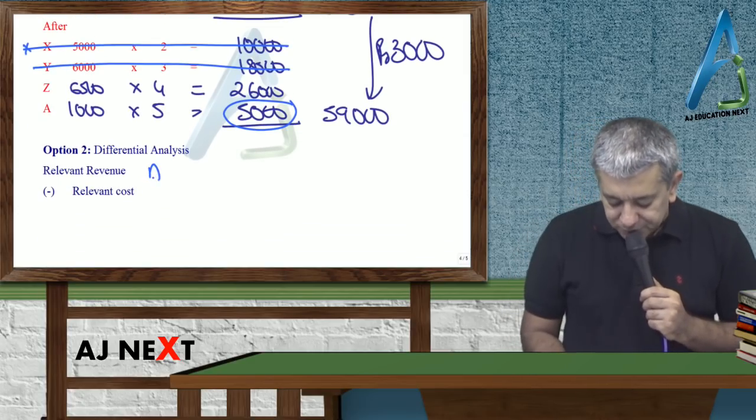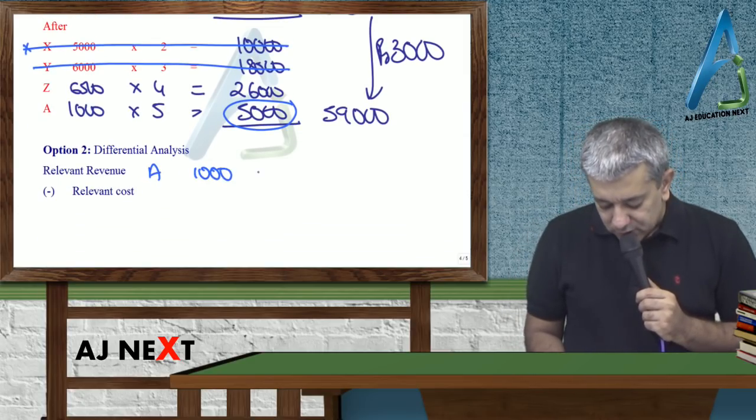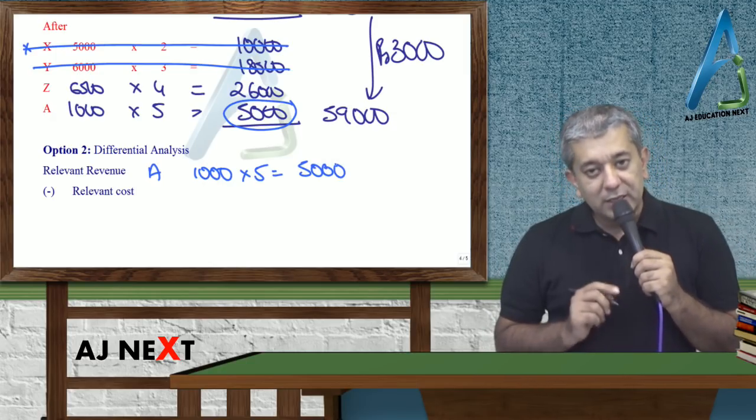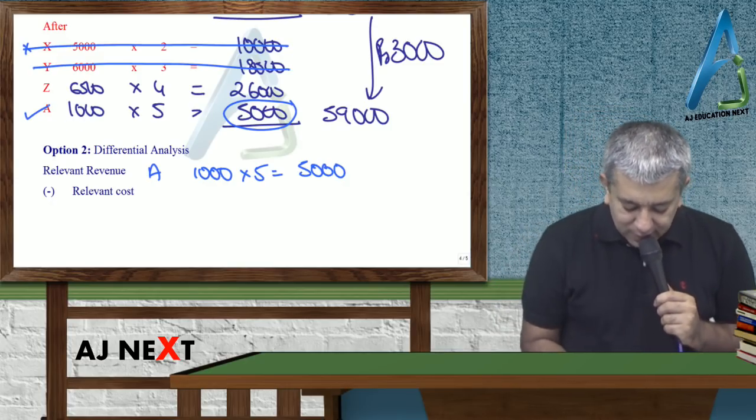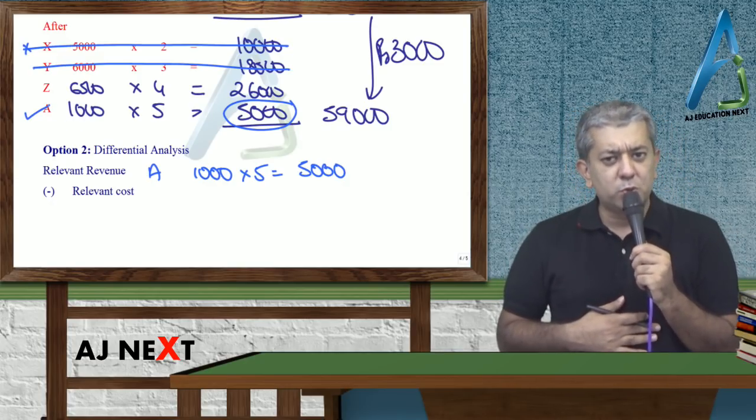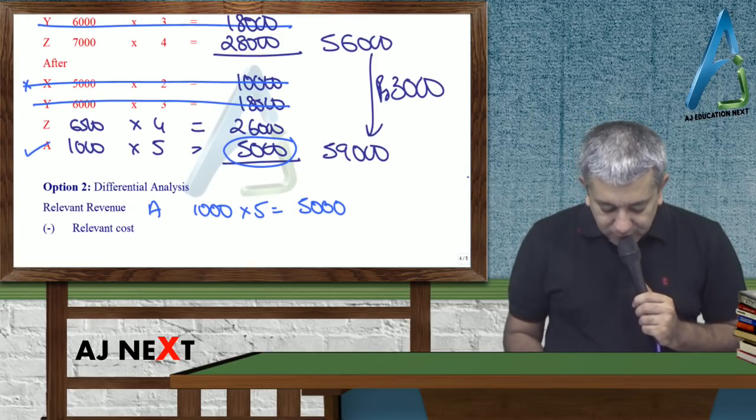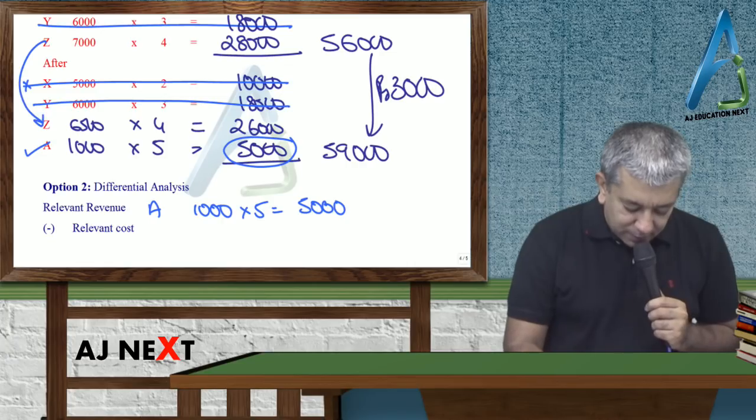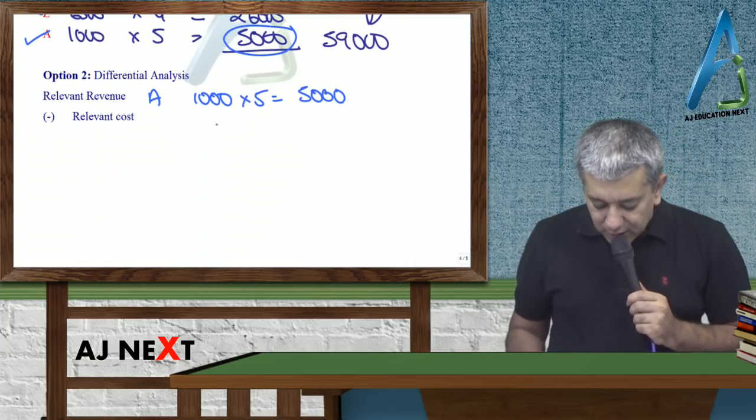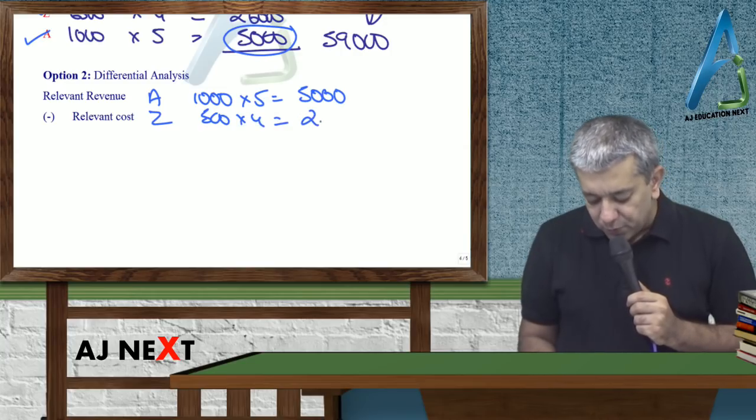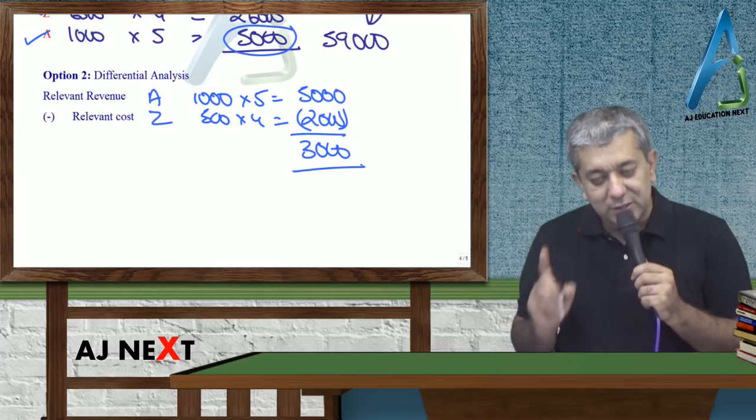A extra milega na. Thousand units of A at the rate of five. Kitna rupiah extra mil jayega? Five thousand. Lekin sara socho, agar A mil raha hai, toh kuch lose bhi toh ho raha hai. Kya lose ho raha hai? Zed ka na, kitna units joh hai abhi nahin ban paayega? Five hundred. Har unit ke upar, kitna rupiah kamaa lete thay? Four. Toh, kitna rupiah will be lost? Two thousand. Toh, tumhara net answer kitna aajayega? Three thousand, that's the same thing.